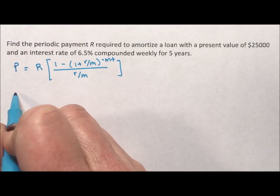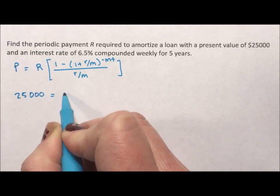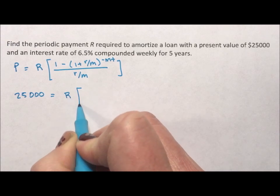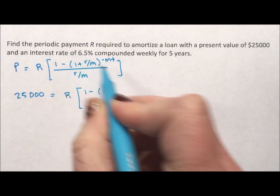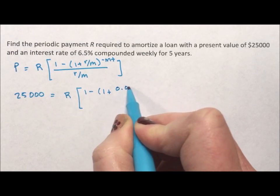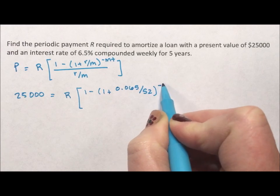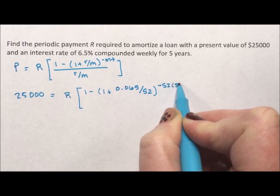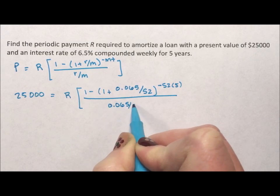So the value of the loan is $25,000. We're looking for the payments. One minus one plus, let's see, the rate is that. So 0.065 weekly, there are 52 weeks in a year, to the negative 52 times 5 divided by 0.065 divided by 52.